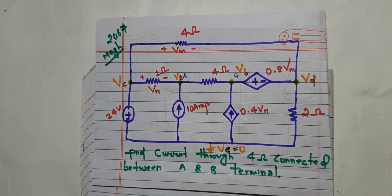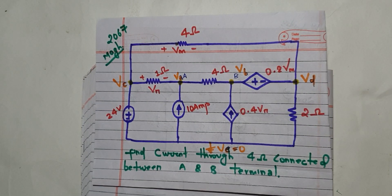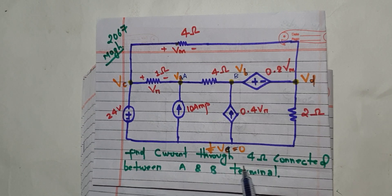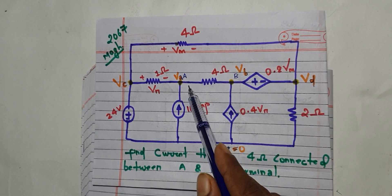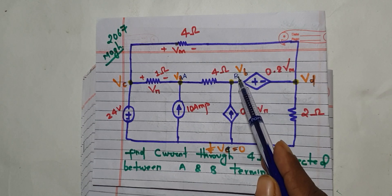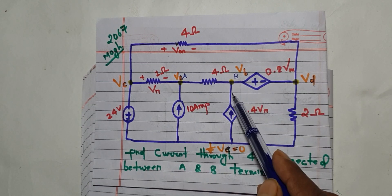Welcome back to the engineering lectures. Today we are going to do a nodal analysis. We have a question about finding the current through four resistors connected between the A and B terminals.